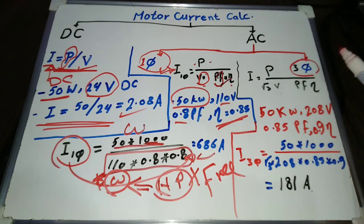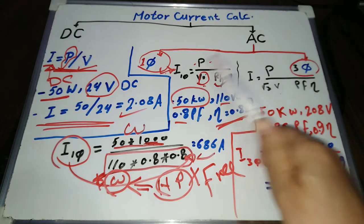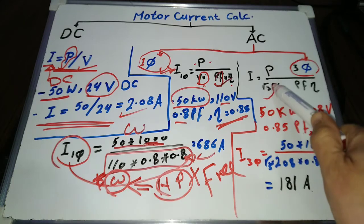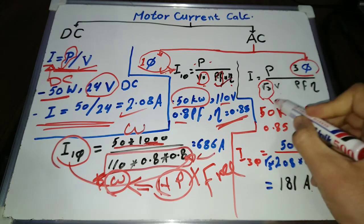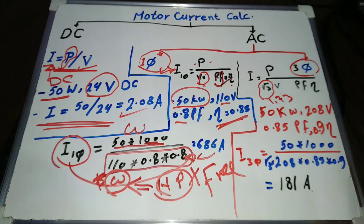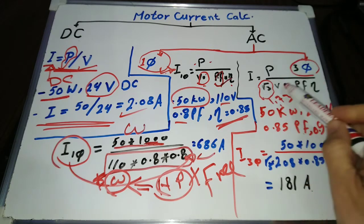Three phase motor current equation is the same as single phase motor equation, except one thing: 1.73 in the equation. Three phase current equals power divided by 1.73 times voltage times efficiency times power factor.